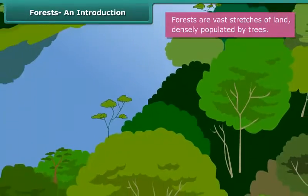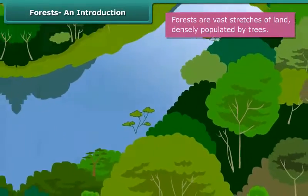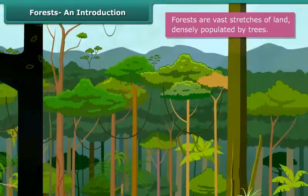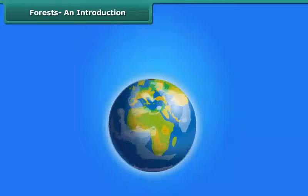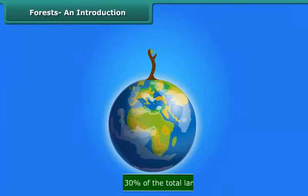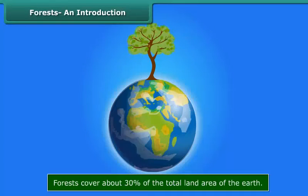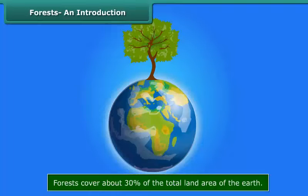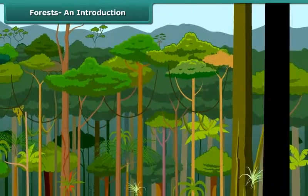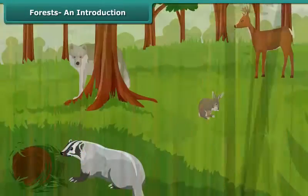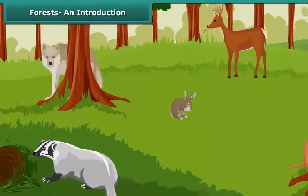Forests are vast stretches of land densely populated by trees, also known as woods. Forests cover about 30% of the total land area of the earth. They include not just trees, but also smaller plants, shrubs and bushes.